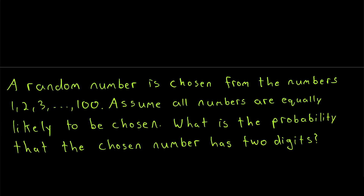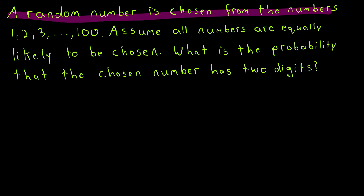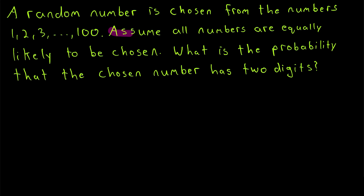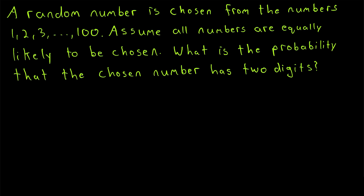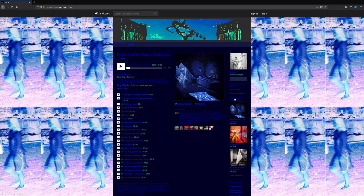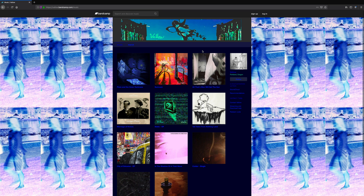Here's a quick practice problem to try on your own: a random number is chosen from the numbers 1 through 100. Assume all numbers are equally likely to be chosen. What's the probability that the chosen number has 2 digits? Let me know what you get in the comments, and I'll leave the solution in the description. I hope this video helped you understand how to calculate probabilities involving equally likely outcomes. Thank you for watching — subscribe for the swankiest math lessons on the internet, and thanks to Vallo for permission to use his music.